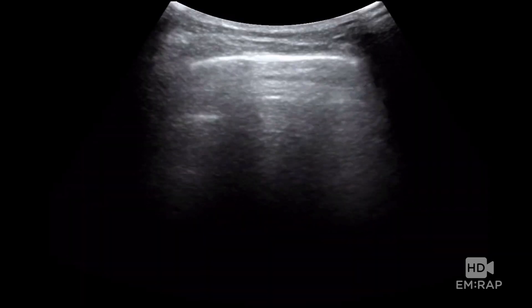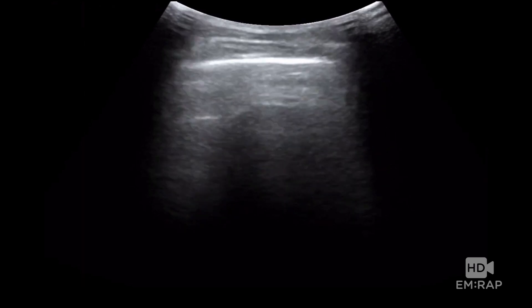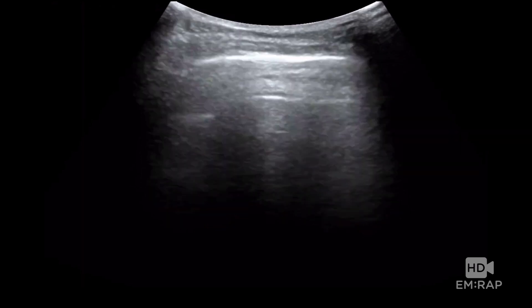Here's an example of an area of the lung without pulmonary edema. So imagine a rib-rib shadow, rib-rib shadow. This is the pleural line right here, and this guy right here, this horizontal artifact is called an A-line. A stands for air. It means not pulmonary edema.